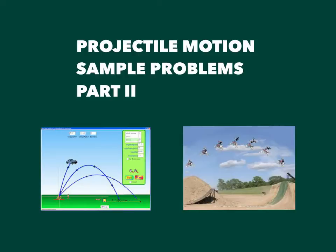In this video, we want to continue talking about two kinds of projectile motion problems. One is an object launched at an angle, and the other is an object launched horizontally. In projectile motion sample problems part one, we did a problem where an object was launched horizontally. Now we're going to try a problem where the projectile is launched at an angle.